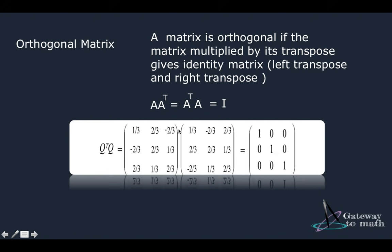Next one is orthogonal matrix. An orthogonal matrix is one in which when the matrix is multiplied with its transpose, it gives an identity matrix. Note that it should be both left transpose and right transpose as well. So this is an orthogonal matrix.